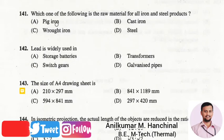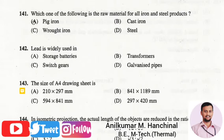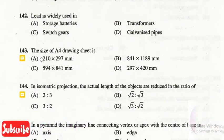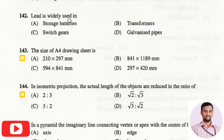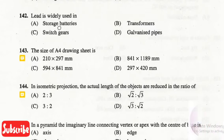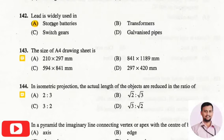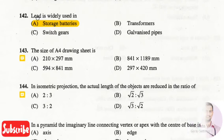The next question is: which one of the following is a raw material for all iron and steel products? The right answer is option A, that is pig iron. The next question is: lead is widely used in? The right option is the first option, that is storage batteries — lead is most commonly used for storage batteries.